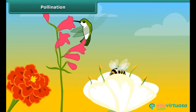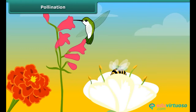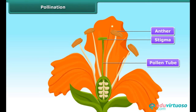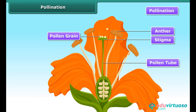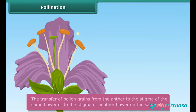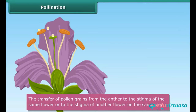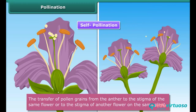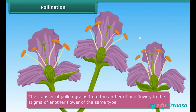Pollination. You must have seen honeybees sitting on a flower. Insects carry away pollen grains on their bodies — they are the pollinating agents. The transfer of pollen grains from anther to stigma of a flower is called pollination. The transfer of pollen grains from the anther to the stigma of the same flower or the stigma of another flower on the same plant is called self-pollination. Whereas the transfer of pollen grains from the anther of one flower to the stigma of another flower of the same type is known as cross-pollination.